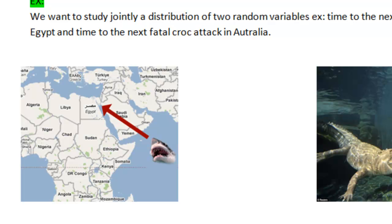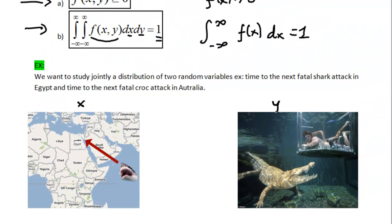Let's say that time to the next fatal shark attack is one variable, that's denoted as x, and time to the next croc attack in Australia is denoted as y. So we've got two random variables here, which are the time to the next fatal attack by one of these animals. And we are interested in their joint distribution, in their joint arrival times. We want to know how these two variables behave jointly.